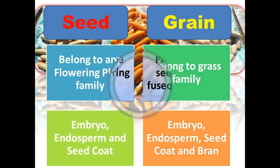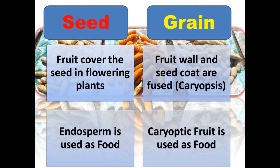Another difference is that the fruit usually covers the seed in flowering plants. But in case of grains, the fruit wall and seed coat are fused. The technical term used for this is called karyopsis. In case of karyopsis, fruit wall and seed coat are fused together. And the endosperm is used as food in case of the seed, whereas the karyopsis fruit is used as food in case of grain.